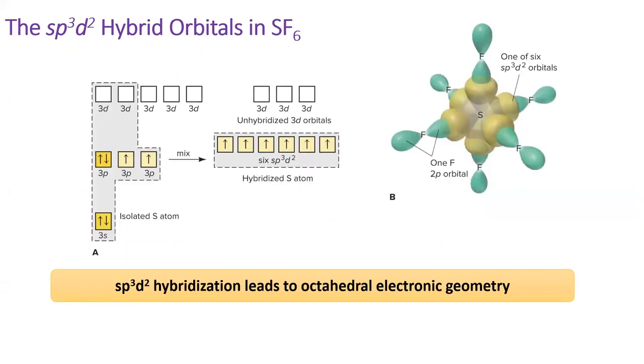As exemplified here in sulfur hexafluoride, each hybrid orbital contains one electron and the central sulfur atom makes six bonds.